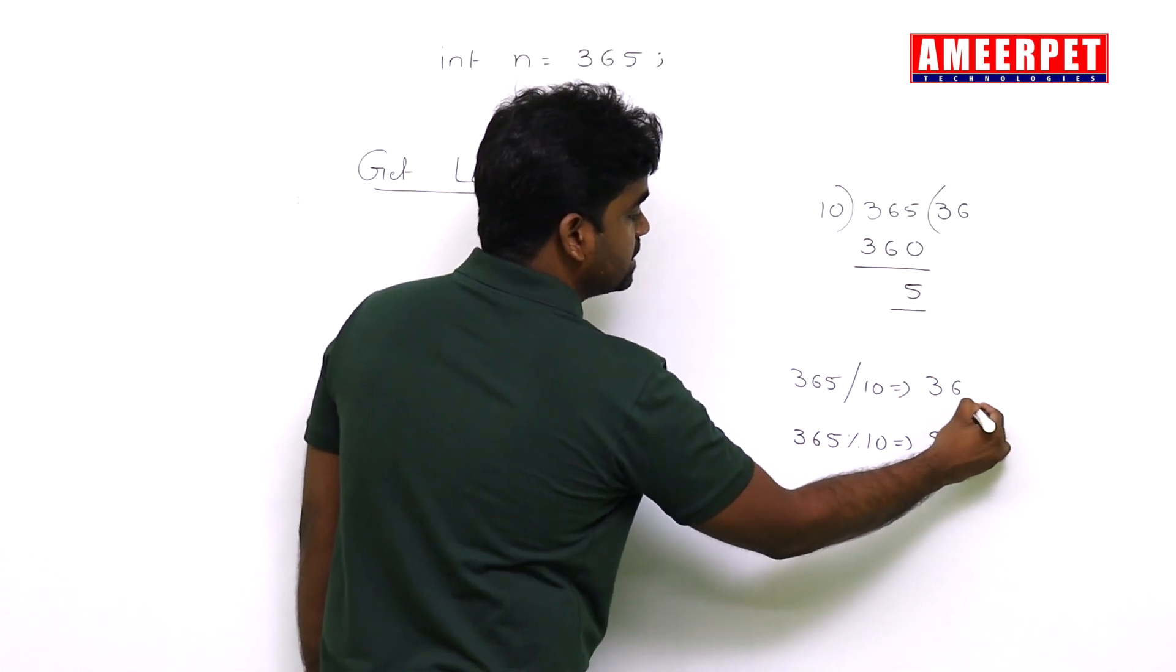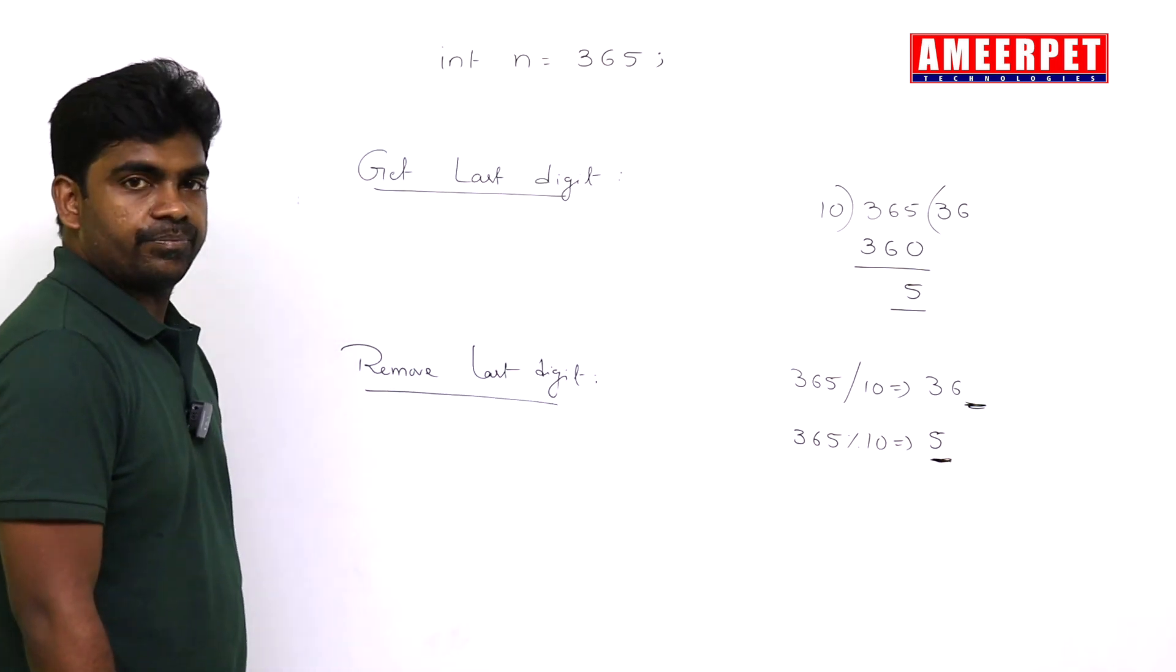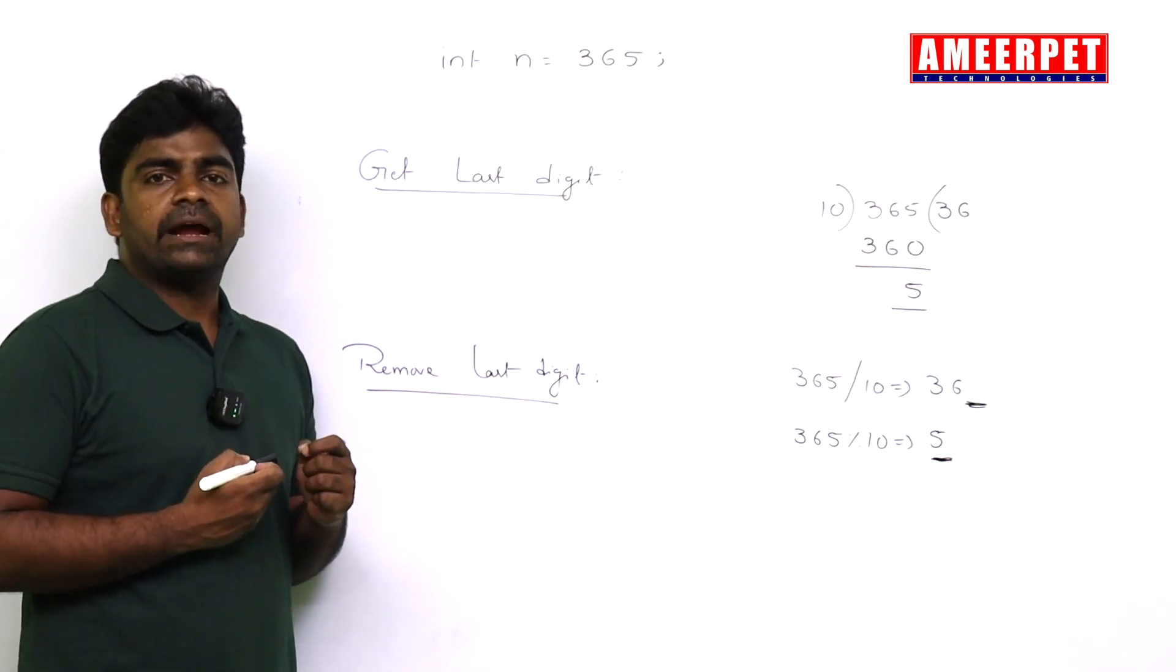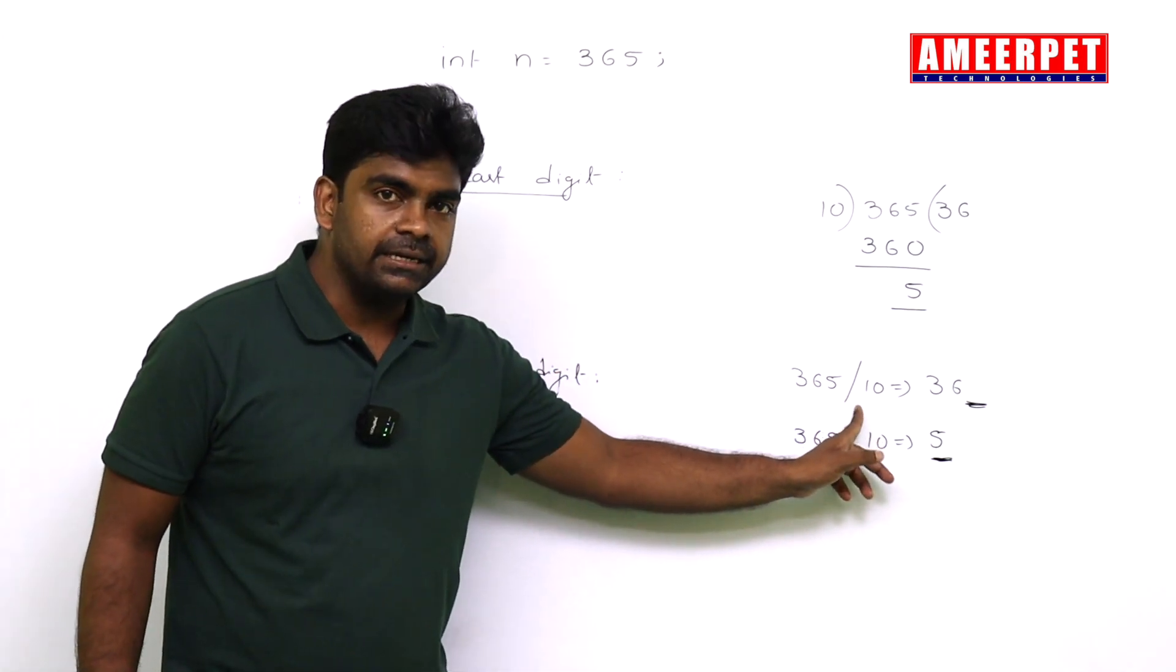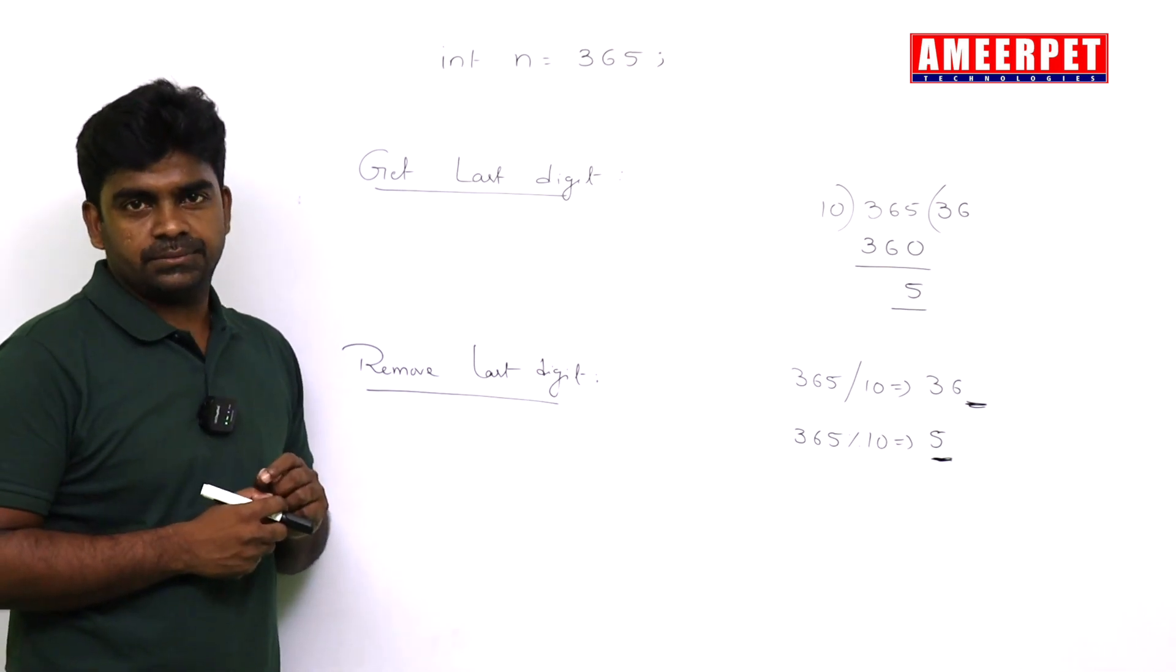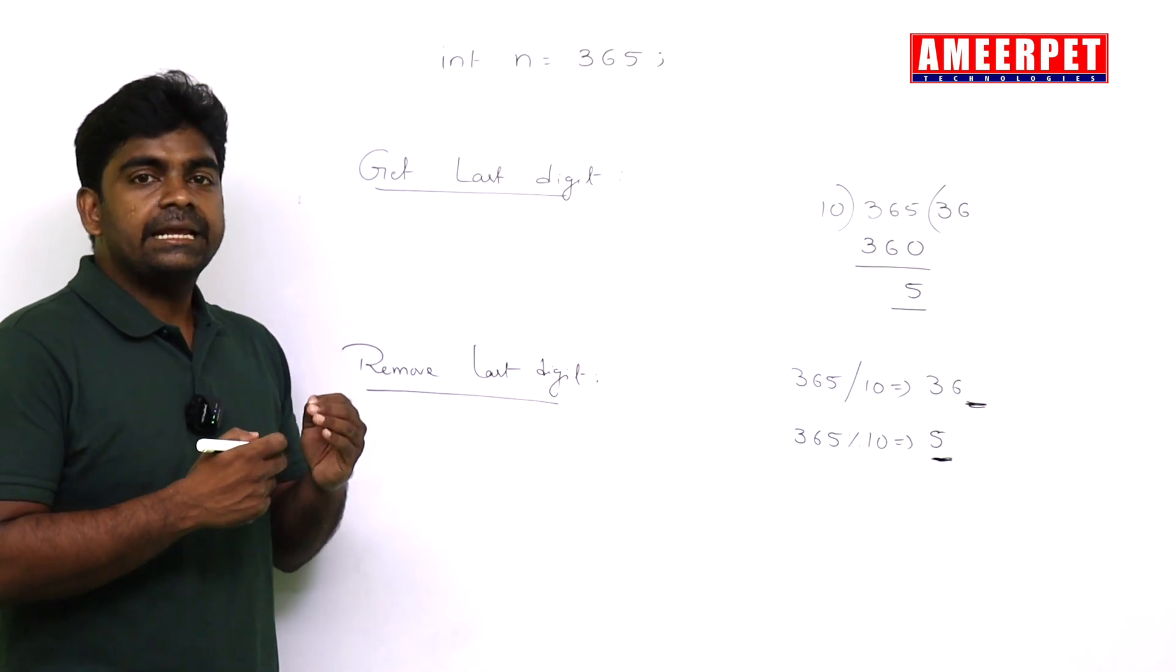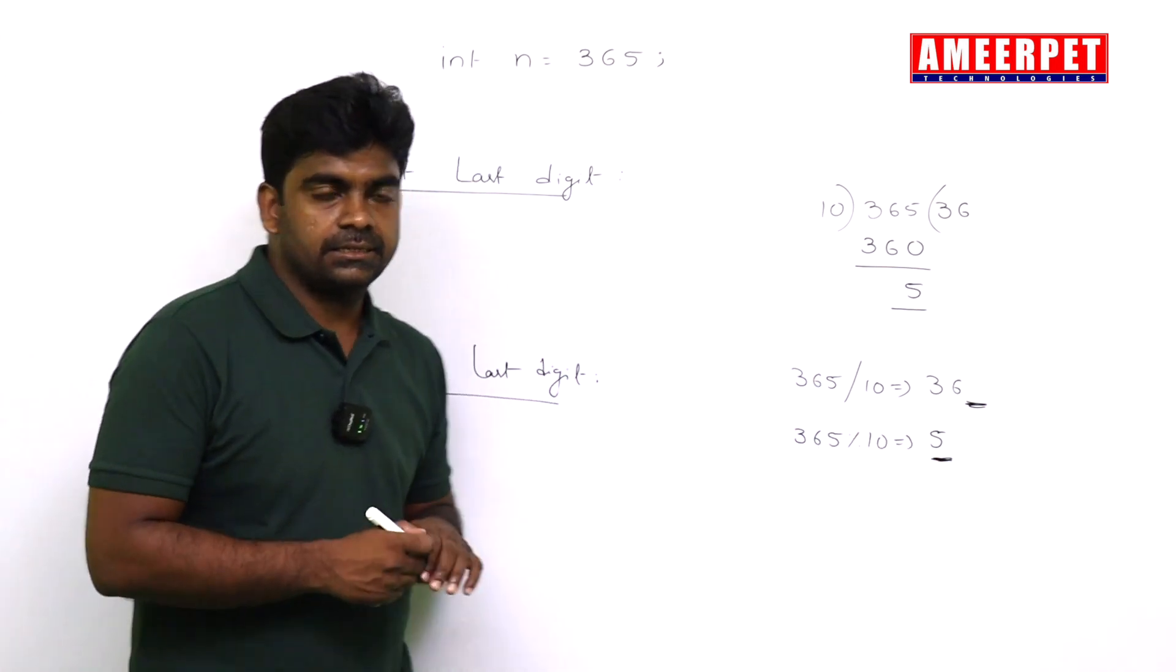And if you get 365 mod 10, you will get the 5. Here last digit removed and here you will get the last digit. So any number you divide with 10, it will remove the last digit from the number - division operation. And whenever you perform remainder operation, any number mod 10 will return the last digit.